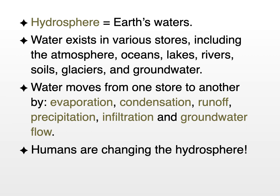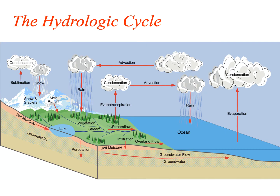Humans are changing the hydrosphere. One of the ways is we pollute some of the stores, including oceans, lakes, and rivers. We've also modified the way water moves from the ground surface into the atmosphere and back down through climate change.